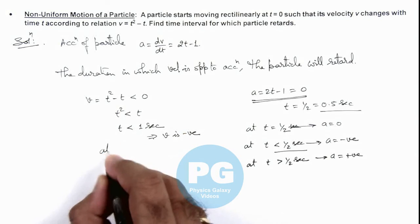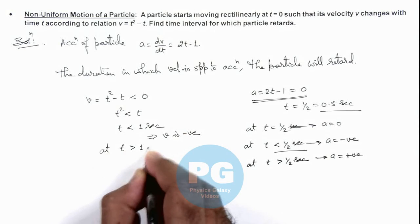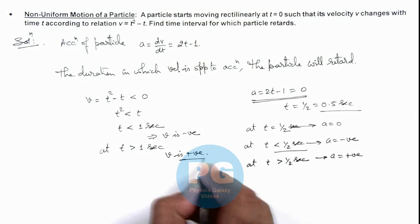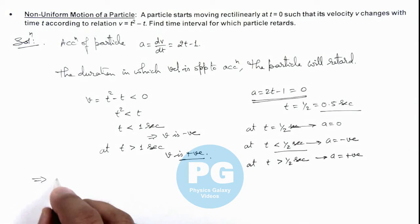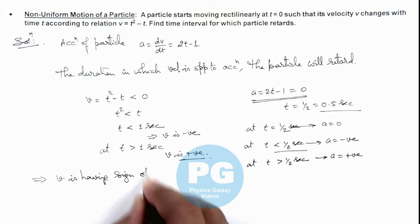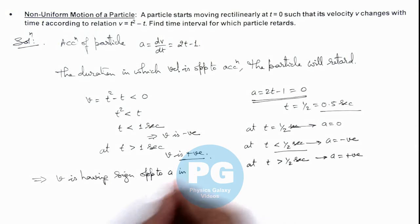At t > 1 second, v is positive. This implies v has sign opposite to a in the duration when 0.5 seconds < t < 1 second.